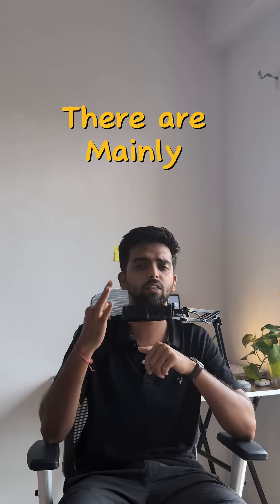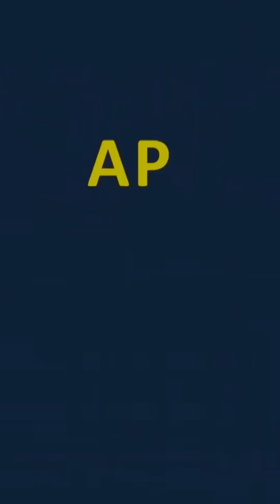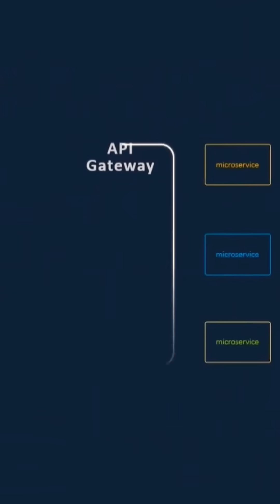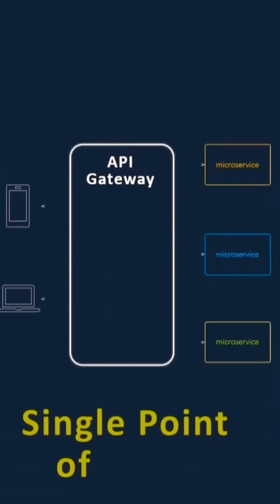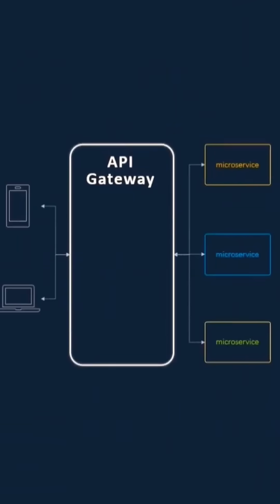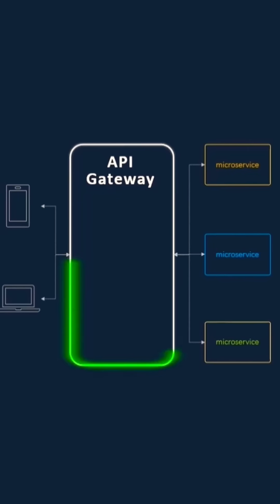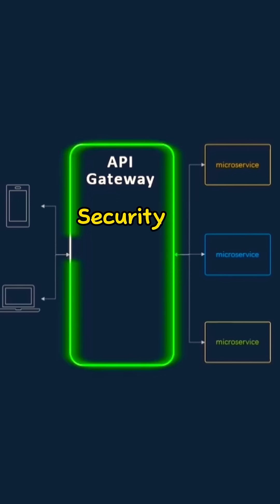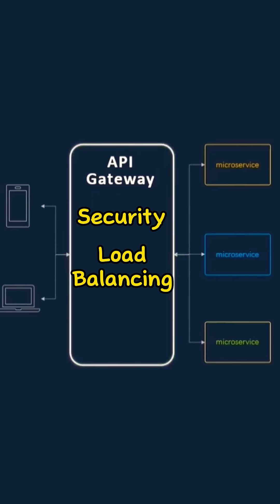In its architecture, there are mainly three parts. First is API Gateway. Think of it as your application's entry point, because it decides which service should be called after a user request. Also, it manages security, load balancing and routing.